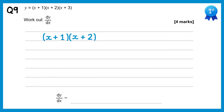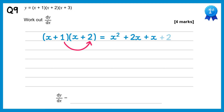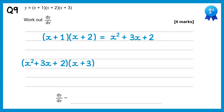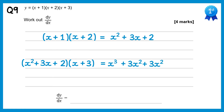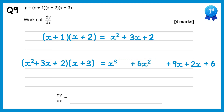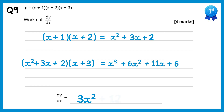For this question we need to expand all the brackets, starting with the first two: x times x is x squared, x times 2 is plus 2x, 1 times x is plus x, and 1 times 2 is plus 2. Simplifying the middle terms gives plus 3x. Now we multiply this quadratic by the final bracket x plus 3: x squared times x is x cubed, x squared times 3 is plus 3x squared, 3x times x is plus 3x squared, 3x times 3 is plus 9x, 2 times x is plus 2x, and 2 times 3 is plus 6. Combining: 3x squared plus 3x squared is 6x squared, and 9x plus 2x is 11x. Differentiating: x cubed gives 3x squared; 2 times 6 is 12, reducing to power 1, giving 12x; the x drops off the 11x term leaving plus 11; and the constant differentiates to 0.